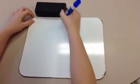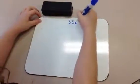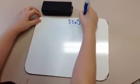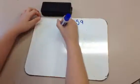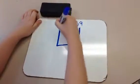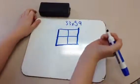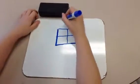So I'm doing the question 33 times 59, and I'm going to do a 2 by 2 grid. It looks like that, and I'm going to break my numbers up.